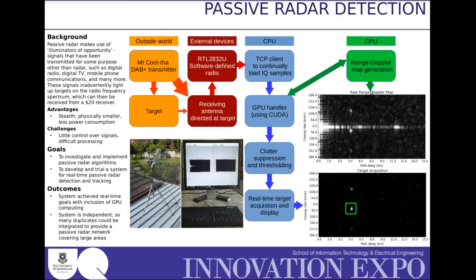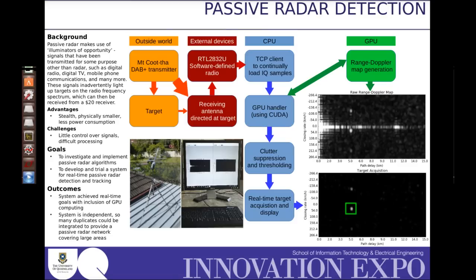which then is used to rapidly generate range Doppler maps, which are then handed back, and then clutter suppression is performed to get rid of all the stuff we don't care about, and then we've got real-time target acquisition and display. So on a raw map you can see there's all stuff we don't care about, but then with clutter suppressed, we've got a target that's been detected. So let's have a look at the system working.